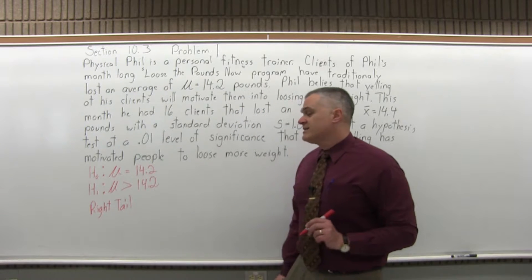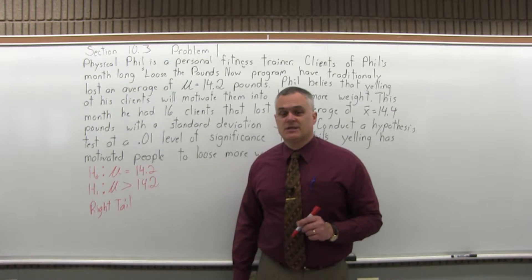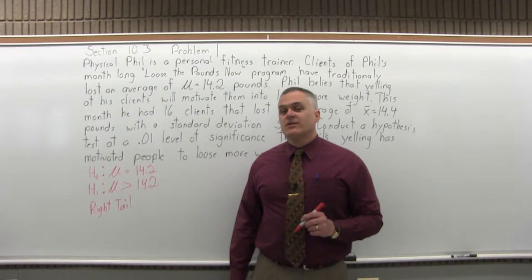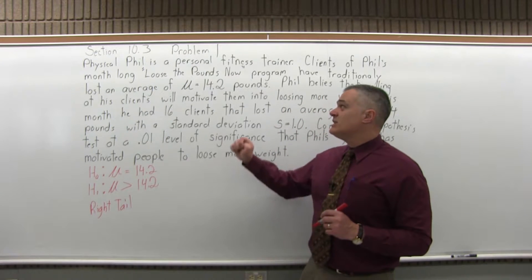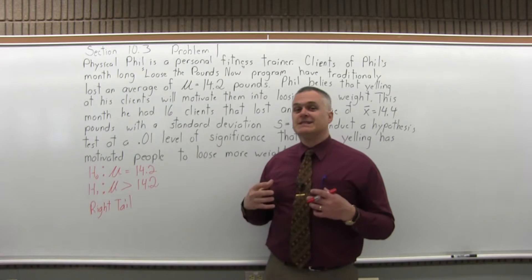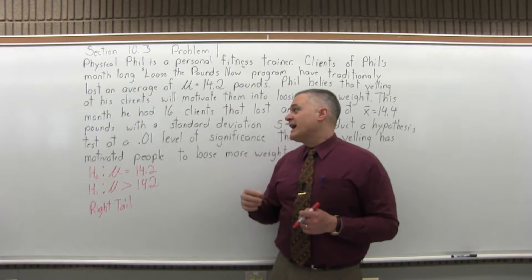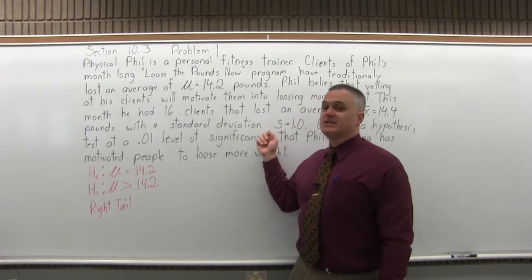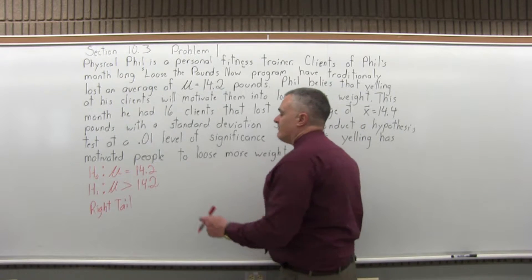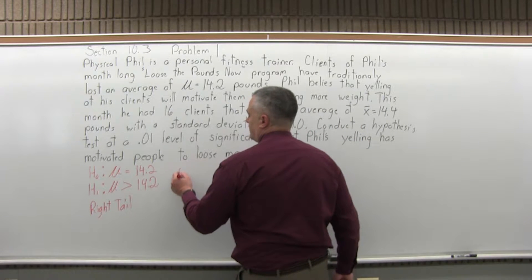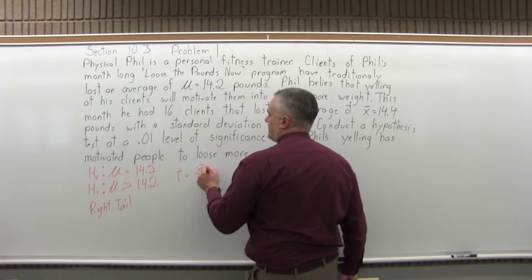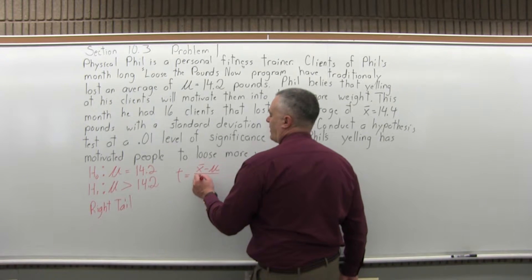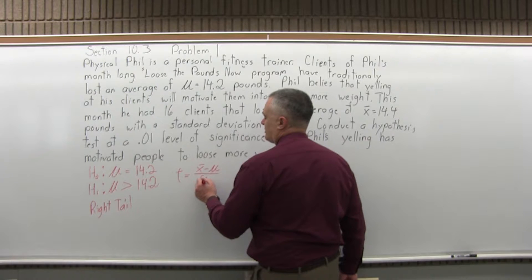The next part of the process, step four, is calculate the value for T. If we knew the standard deviation of the population, we would calculate a Z. But since we have to use the standard deviation of the sample, it's T. Very similar formula. T is X bar minus mu over S, the sample standard deviation over the square root of N.